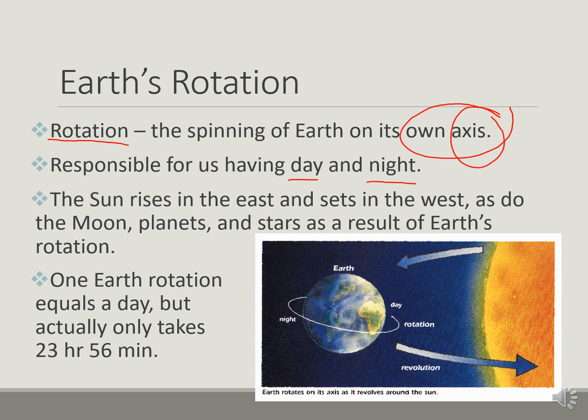So the sun rises in the east and sets in the west, right? The moon does the same thing. Planets and stars as a result of the Earth's rotation. Because as we rotate, everything that was on that side, if you did a 180 degree turn, you're going to see everything that was previously behind you.